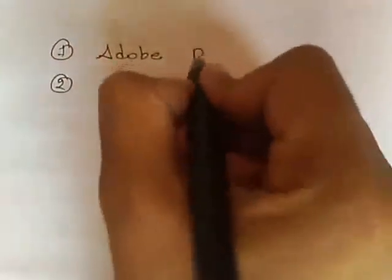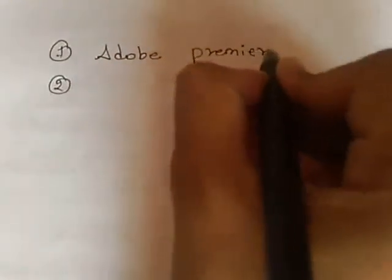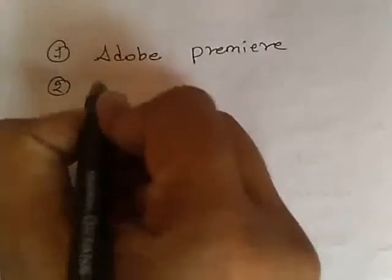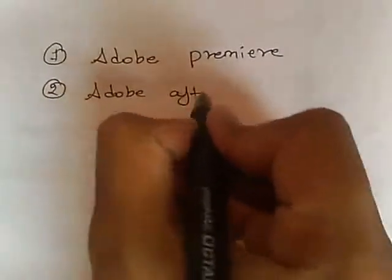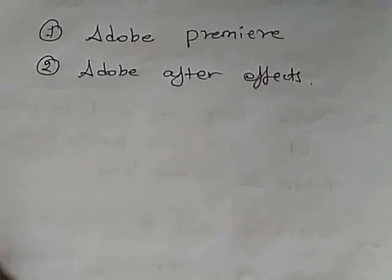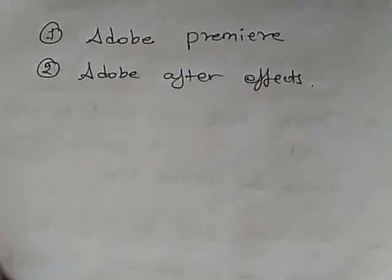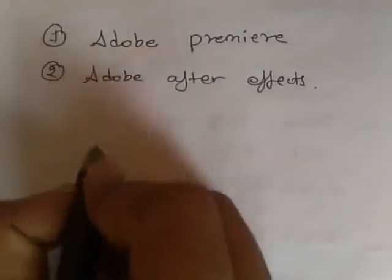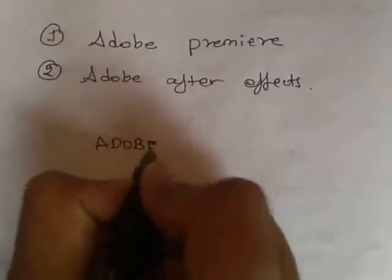Now we are dealing with video editing tools, so we must have knowledge of different types of software to do video editing. The two most important software for video editing are: first, Adobe Premiere, and second, Adobe After Effects. These are the two software used to provide editing in a video. Now first we will discuss about Adobe Premiere.